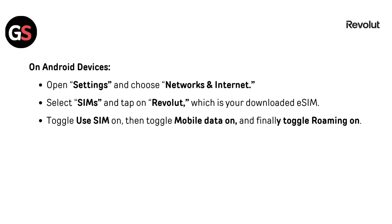On Android devices, open Settings and choose 'Network and Internet.' Select 'SIMs' and tap on Revolt, which is your downloaded eSIM. Toggle 'Use SIM' on, then toggle 'Mobile Data' on, and finally toggle 'Roaming' on.